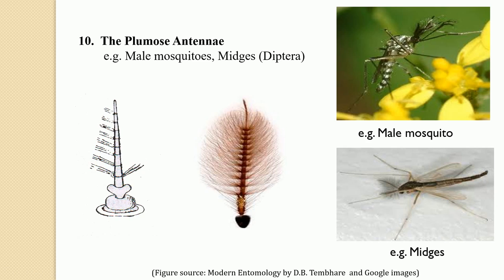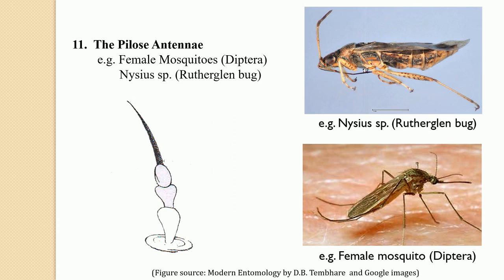The next type is the plumose antennae. In the plumose antennae, the flagellum is composed of a large number of cylindrical segments, and these segments are provided with long hairs on either side. The basal is the scape, then the pedicel, and these flagellar segments are somewhat cylindrical with long hairs on both sides. If long hairs are present on the cylindrical segments of the flagellum, such antennae is referred to as the plumose antennae. This is the characteristic of male mosquitoes and midges belonging to the order Diptera — the plumose antennae has a sexual dimorphic significance as it is only found in the male mosquito.